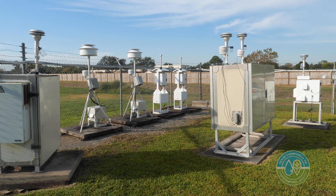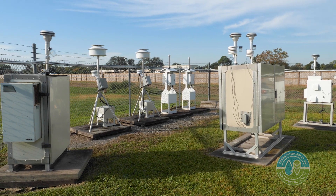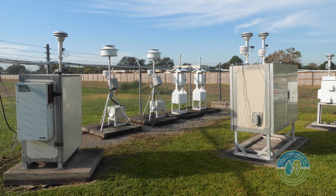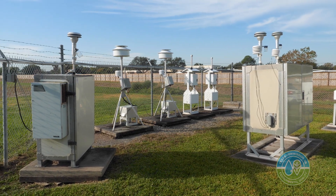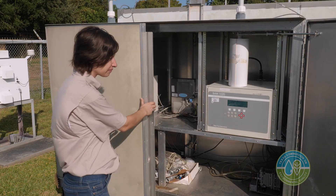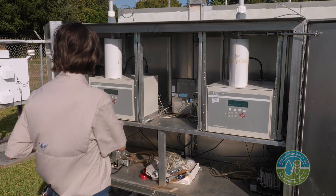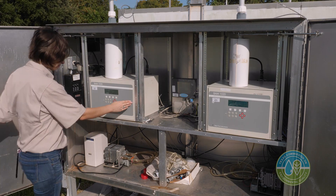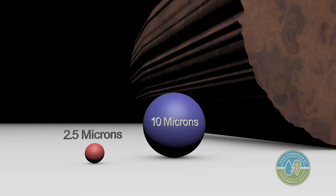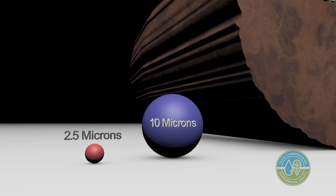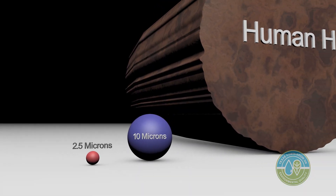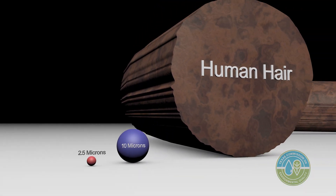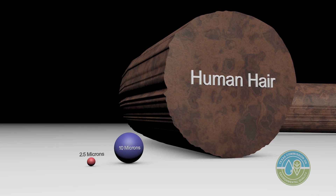The next thing that you might see are continuous particulate monitors and non-continuous. There are also particulate monitors that measure particulate matter 10 microns or less and 2.5 microns or less.